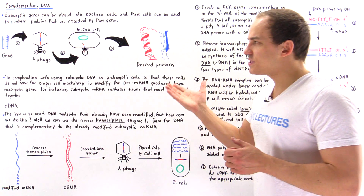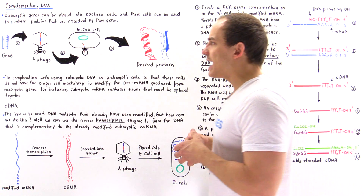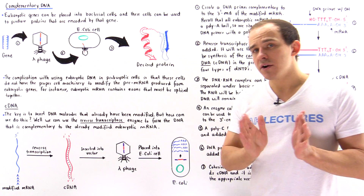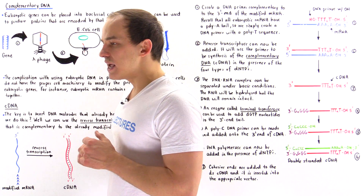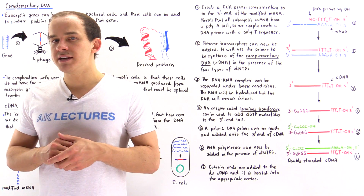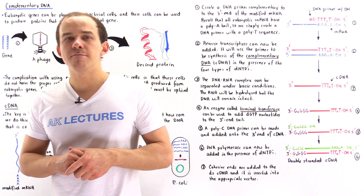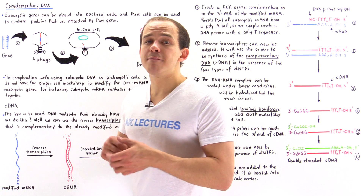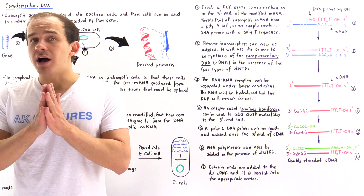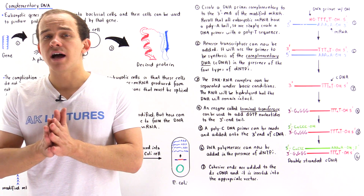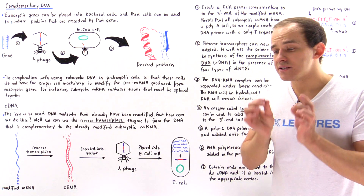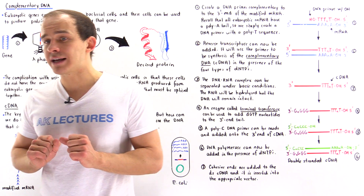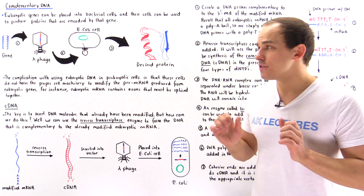The major problem with this procedure — the initial problem we had to solve when first developing this process — is that eukaryotic mRNA molecules and prokaryotic mRNA molecules aren't the same. In eukaryotic cells, the initial mRNA molecule synthesized contains both introns and exons. Before that mRNA molecule is used, those introns have to be removed and the exons spliced together. Prokaryotic cells simply don't have the cell machinery to carry out that process, because prokaryotic mRNA always only contains the exons, never the introns.